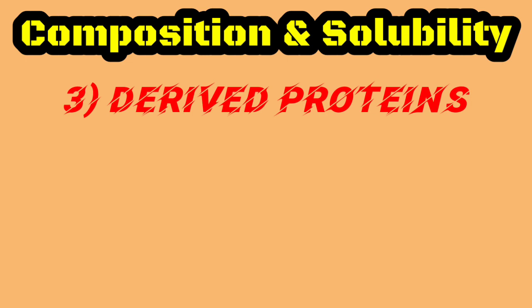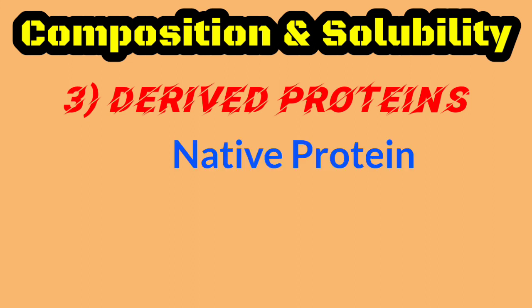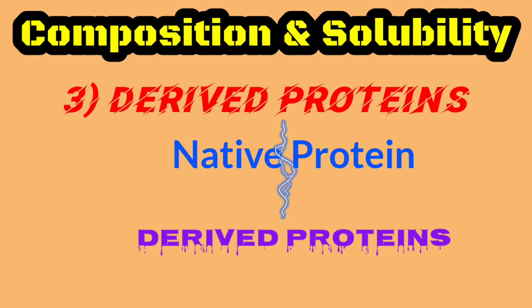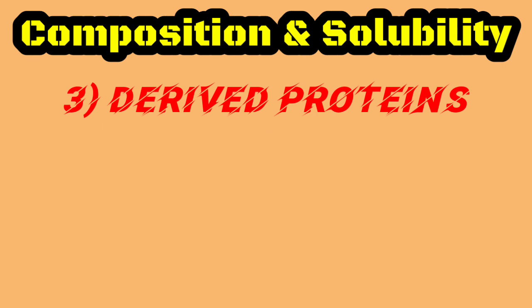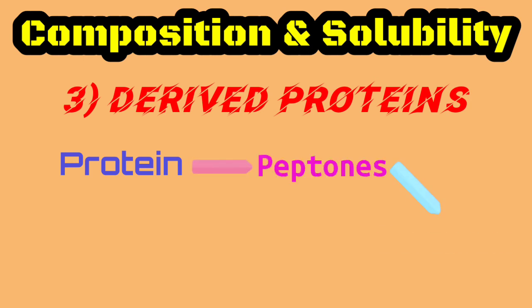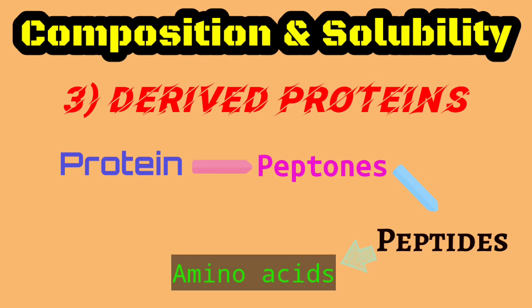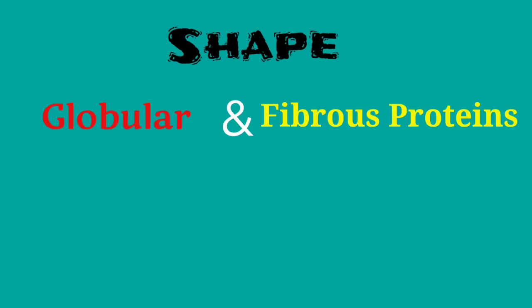Derived proteins are degradation products of native proteins. They are defined as proteins formed by partial hydrolysis of high molecular weight proteins. When a protein is partially degraded, it forms peptones, then peptides, and finally amino acids. Examples of derived proteins are peptone and gelatin.